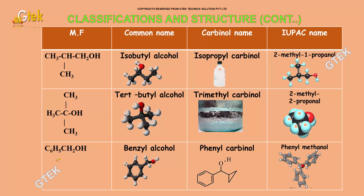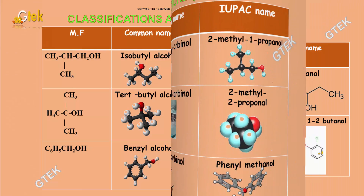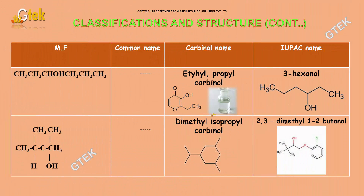The molecular formula CH3CH2CH2OH has a common name benzyl alcohol, carbinol name phenylcarbinol, and IUPAC name phenylmethanol. The molecular formula CH3CH2CHOHCH2CH2CH3 doesn't have a common name; its carbinol name is ethylpropylcarbinol and IUPAC name is 3-hexanol. The molecular formula CH3CHCH3OH has a carbinol name dimethylisopropylcarbinol and IUPAC name 2,3-dimethyl-1,2-butanol.